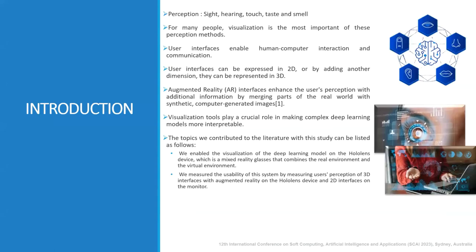Human perception refers to the process by which individuals interpret and make sense of the sensory information they receive from the environment. It involves the brain and the nervous system working together to collect, process, and interpret information from the senses including sight, hearing, touch, taste, and smell. Understanding human perception is necessary in fields such as psychology, neuroscience, design, and human-computer interaction. Researchers and practitioners in this field seek to explore and leverage the mechanism of perception to enhance various aspects of human experience and interaction with the environment. By using these perception methods together, complexity is reduced when there's an abundance of information.